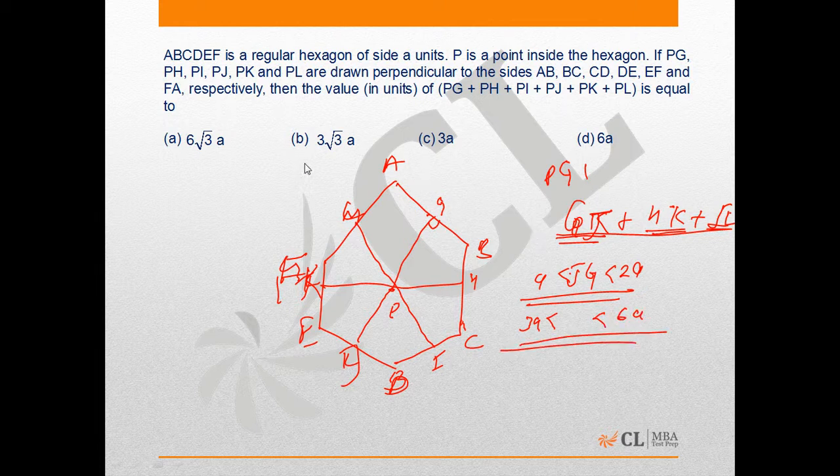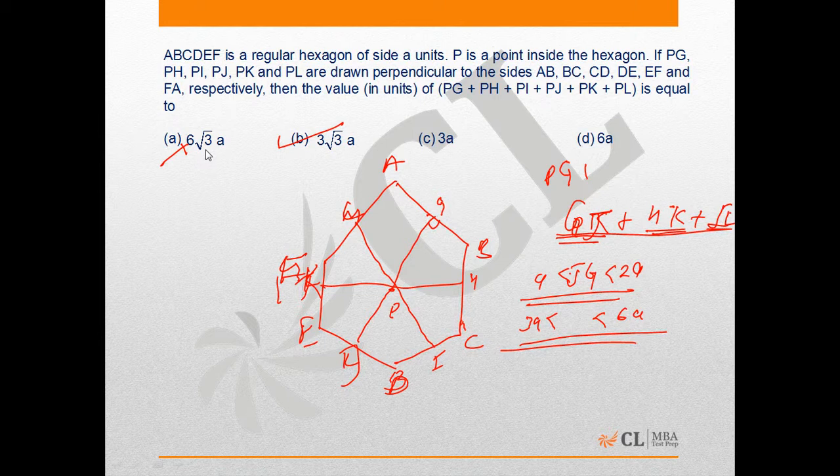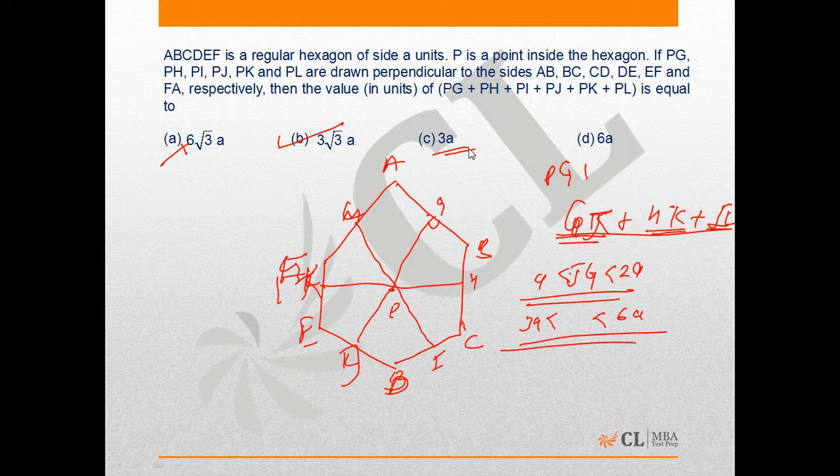Now on checking options, we find option B is the correct answer, because the first option lies beyond the range as it is more than 6a, same is the case with the third option which is equal to 3a.